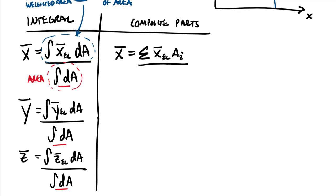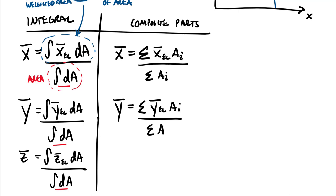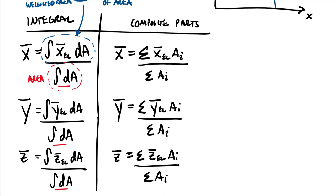Our x-bar equals the summation of x-bar of the element times each area A sub i, divided by the summation of all A sub i's — our total area. Same form for y-bar: summation of y-bar of each element times the area of that element, divided by the sum of all areas. And z-bar equals the summation of z-bar of each element times the area divided by the sum of all areas. You can see a very parallel structure between the integral form and the composite parts form.